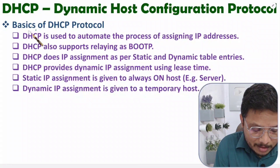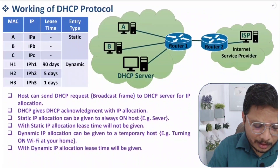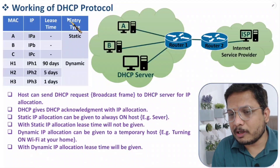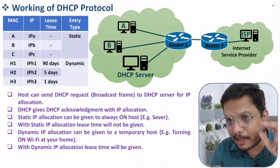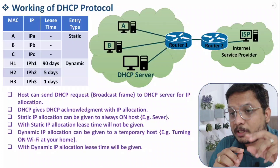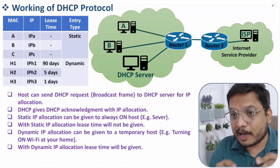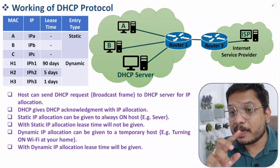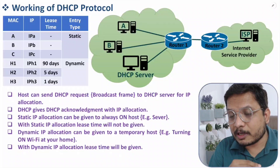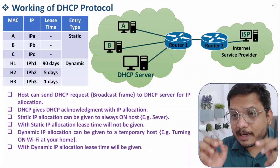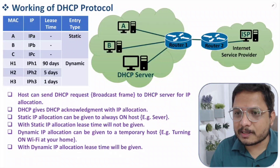First I'll explain the basics of this protocol, after that I'll explain how it works, and after working I'll explain one practical example on my computer. In that I'll show how this protocol is functioning using Wireshark software — how the DHCP request is forwarded, how the DHCP acknowledgement comes, and what data is inside. Everything will be discussed in great detail. So let us first see the basics of DHCP protocol.